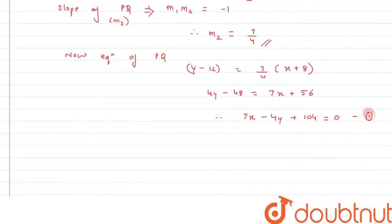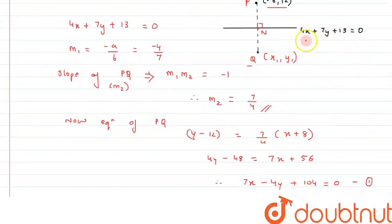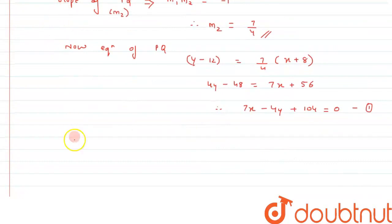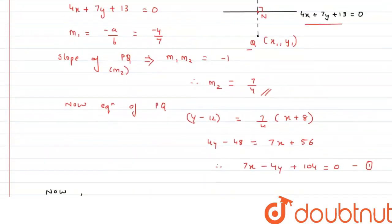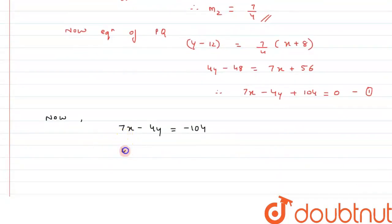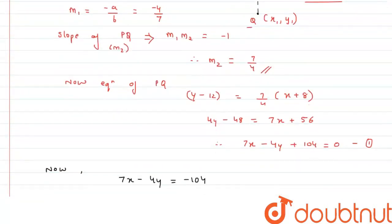Alright, so we have this equation and also the equation of the mirror line. These two lines — PQ and the mirror — are intersecting at point N, so we can calculate its coordinates. We write: 7x minus 4y equals minus 104, and the equation of the mirror is 4x plus 7y equals minus 13.